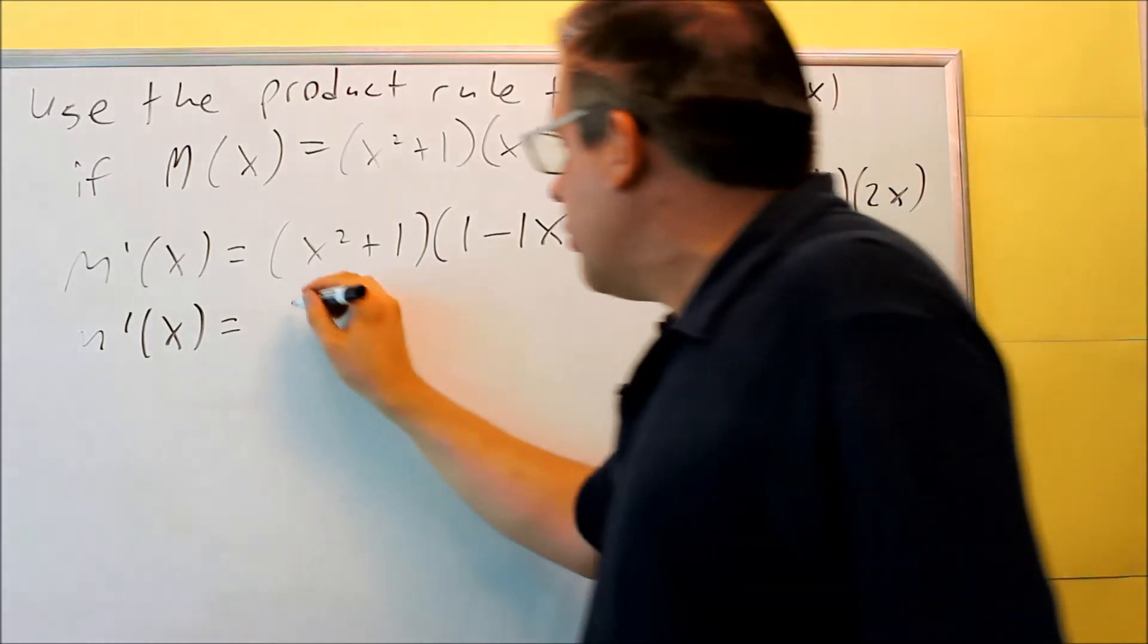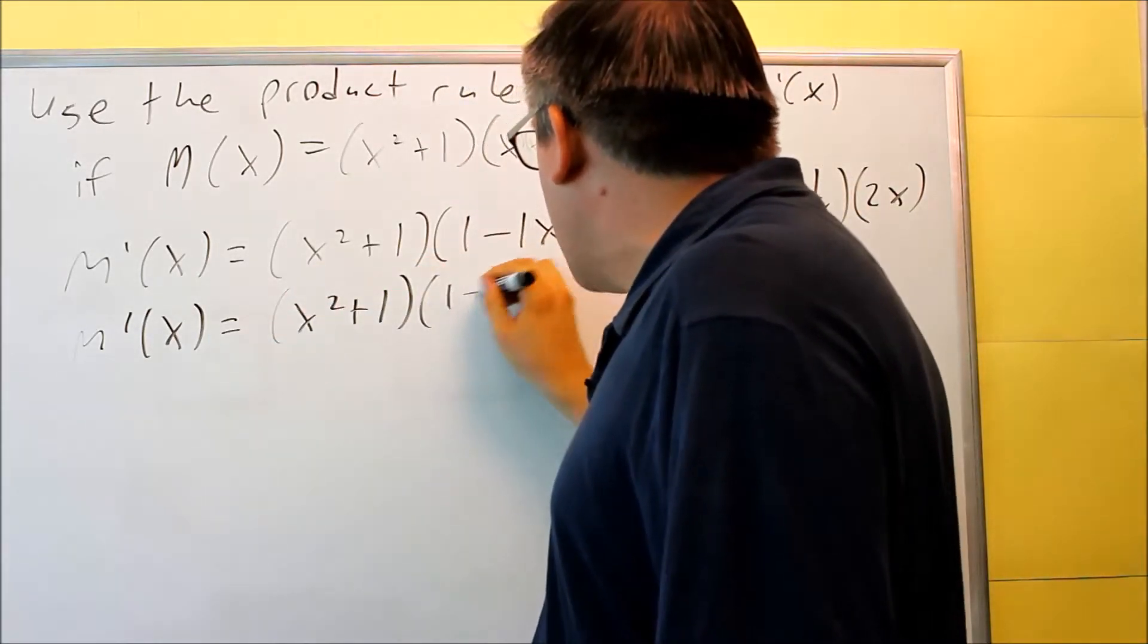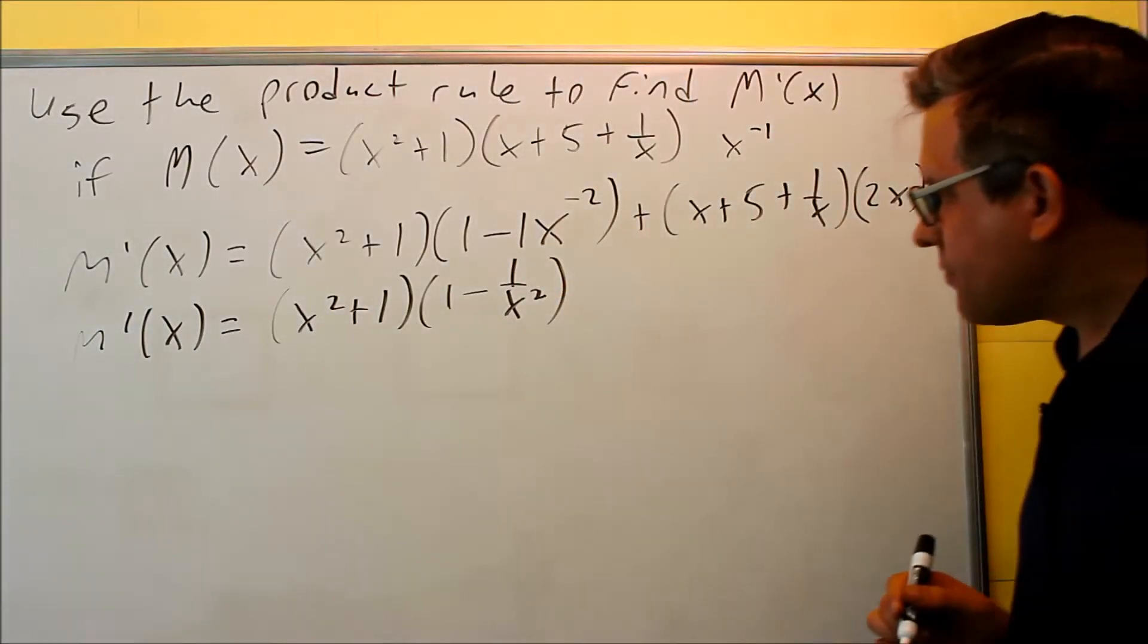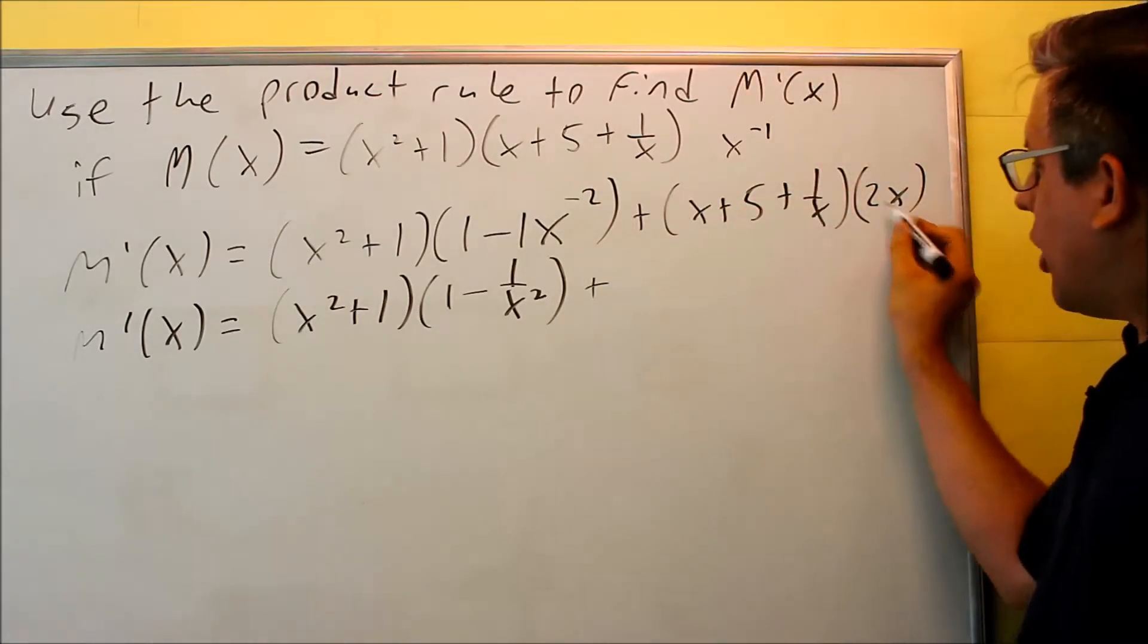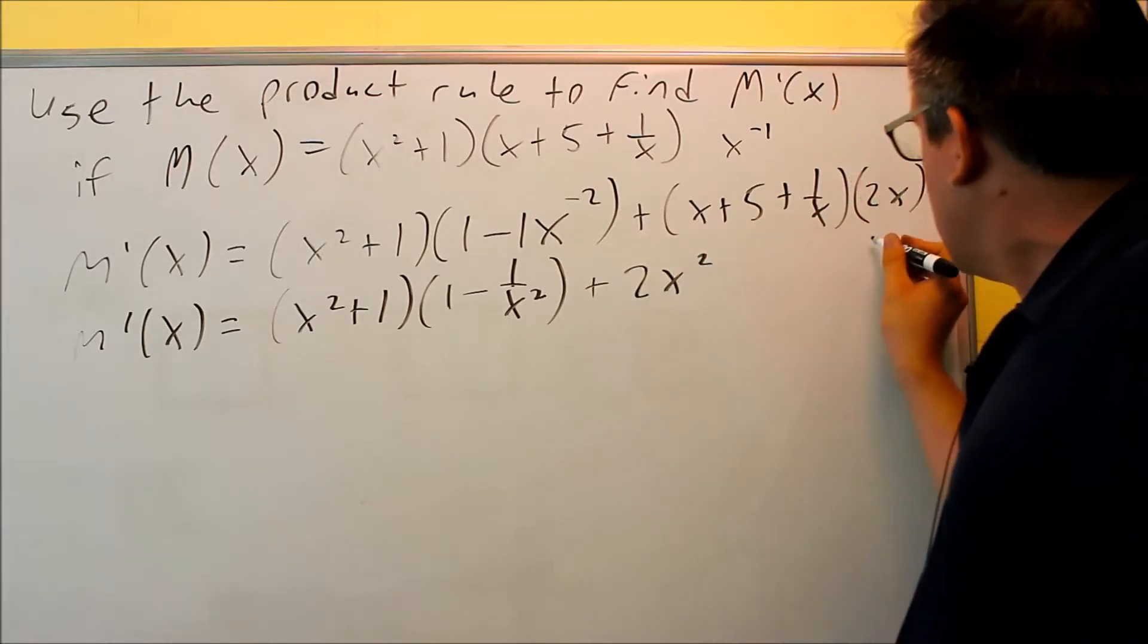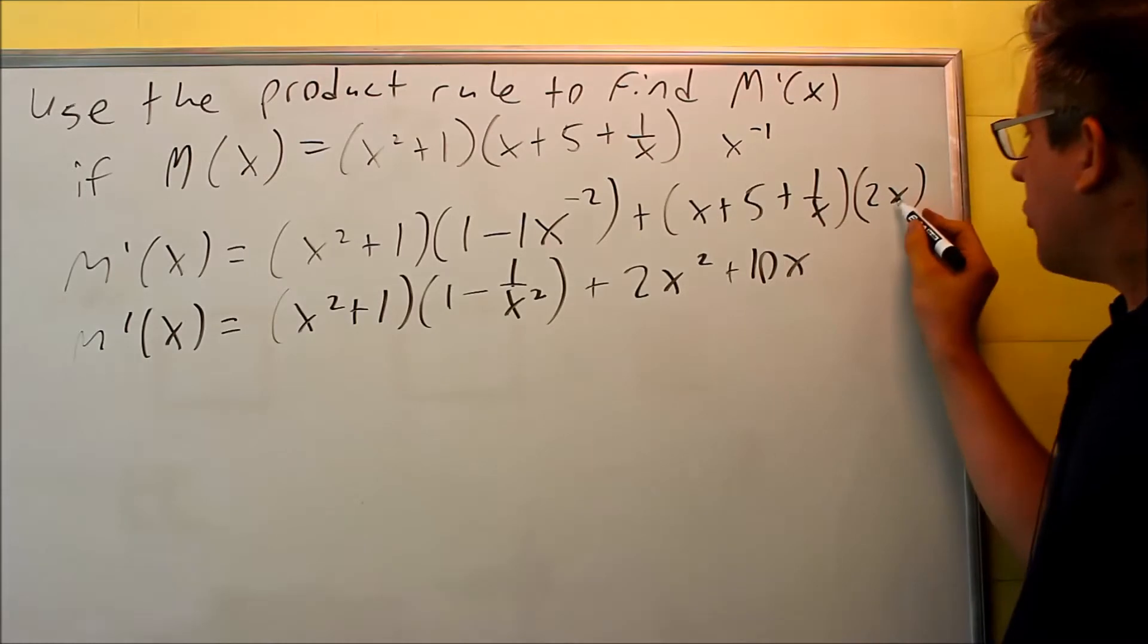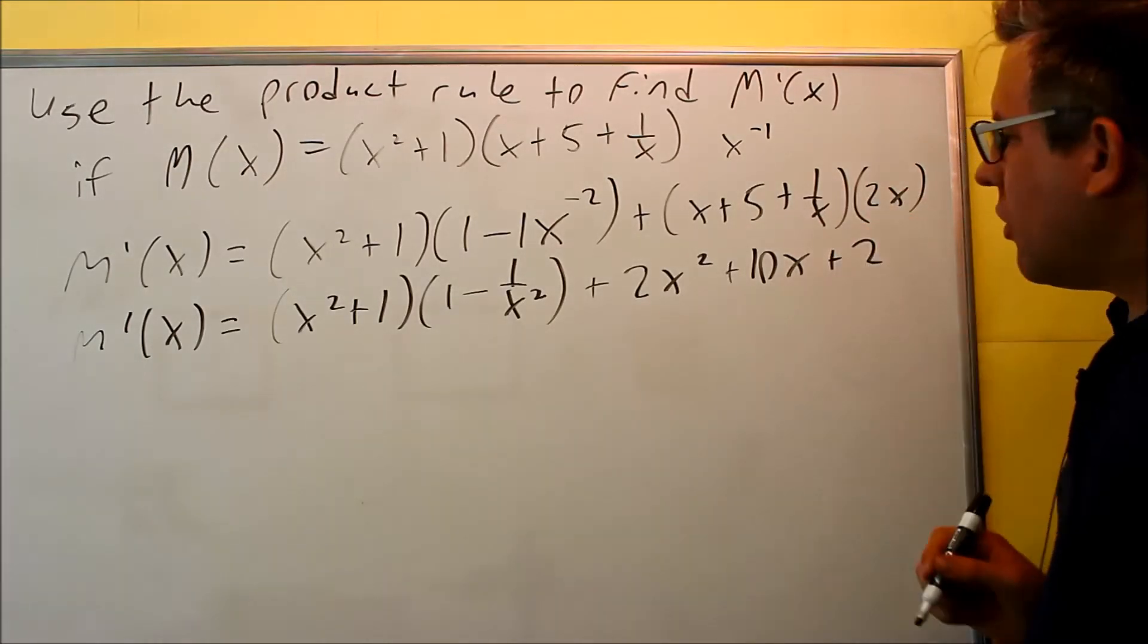Okay, so we'll do x squared plus one, and this can be written as one minus one over x squared, so we can do that. This part over here, I'm actually just going to multiply it all out right now, I'll foil everything, two x times x is two x squared, five times two x is ten x, and I do two x times one over x, I'll just get two for that one.